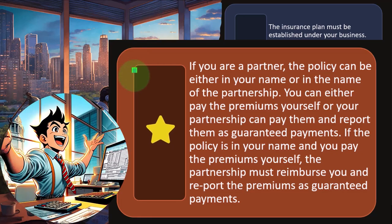If you are a partner, the policy can be in your name or in the name of the partnership. You can either pay the premiums yourself or your partnership can pay them and report them as guaranteed payments. If the policy is in your name and you pay the premiums yourself, the partnership must reimburse you and report the premiums as guaranteed payments.